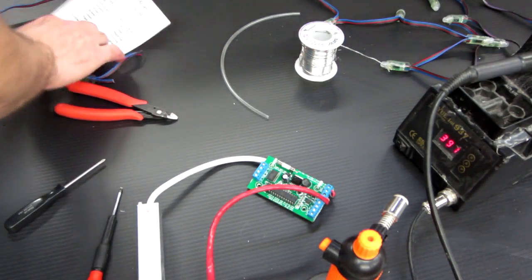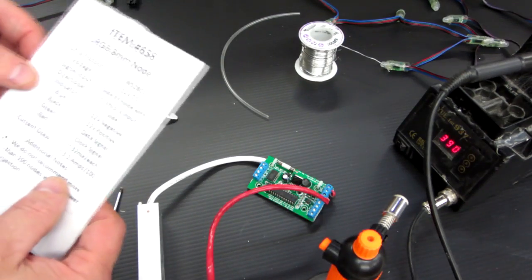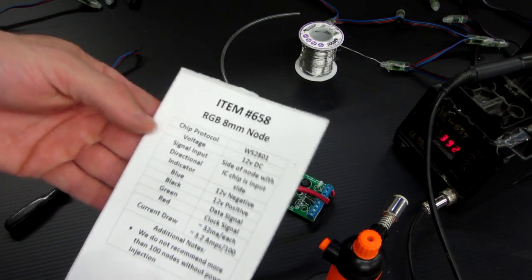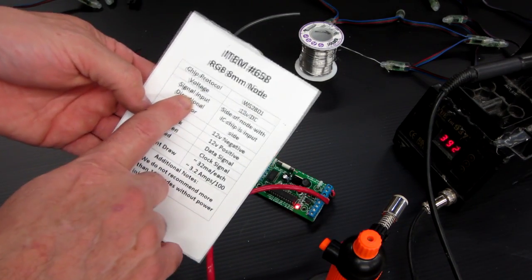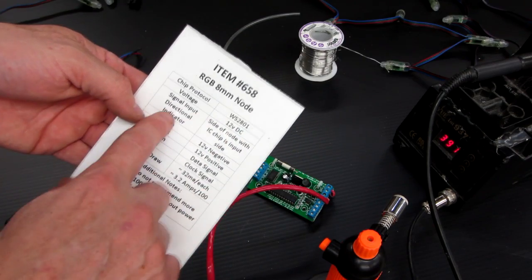Let's go ahead and get started. First what you want to do is refer back to the vendor's instructions on the wiring. Be sure that this is correct. Don't just make any assumptions. In this particular case, we have several pieces of information. We have the voltage, 12 volts DC.